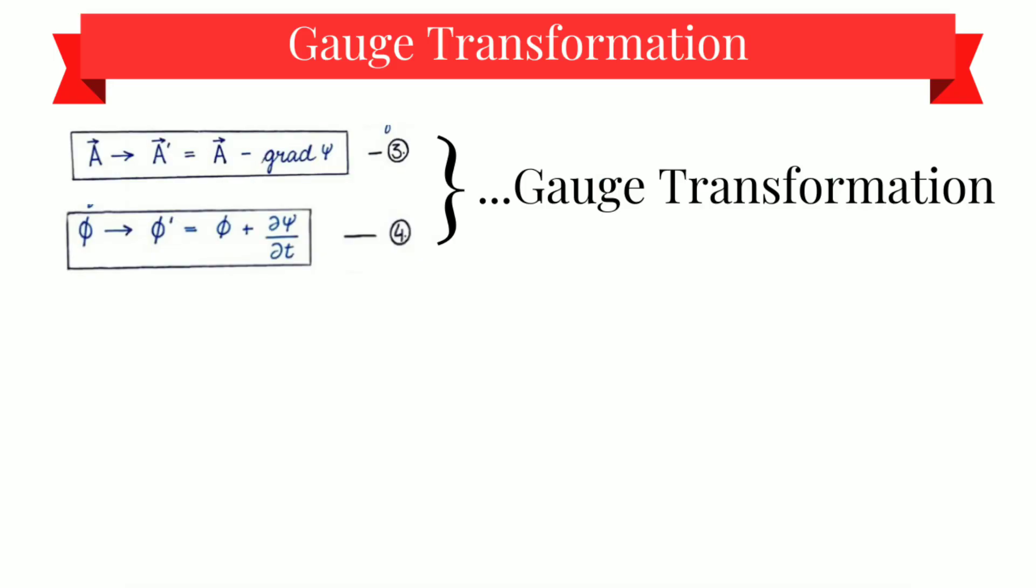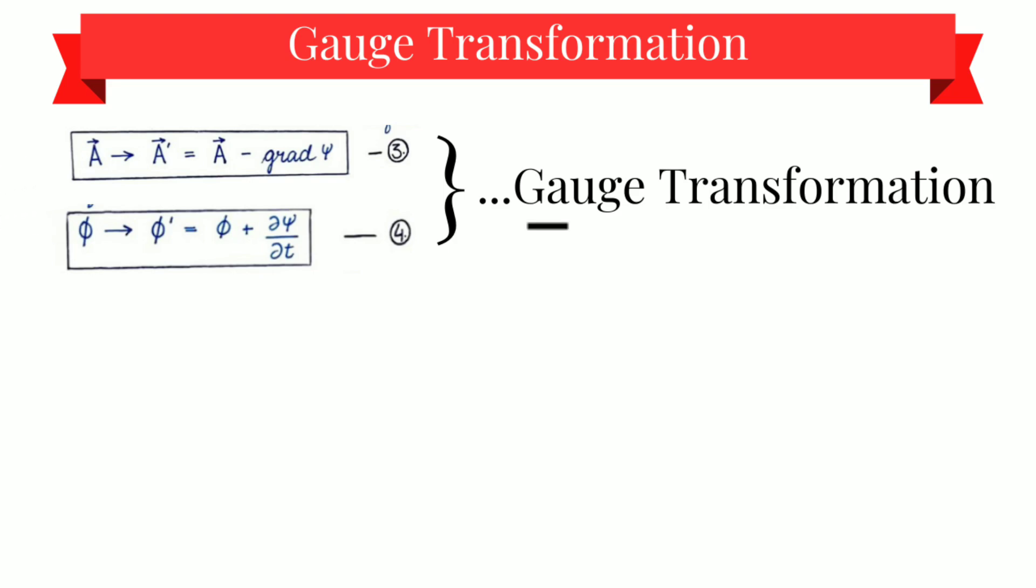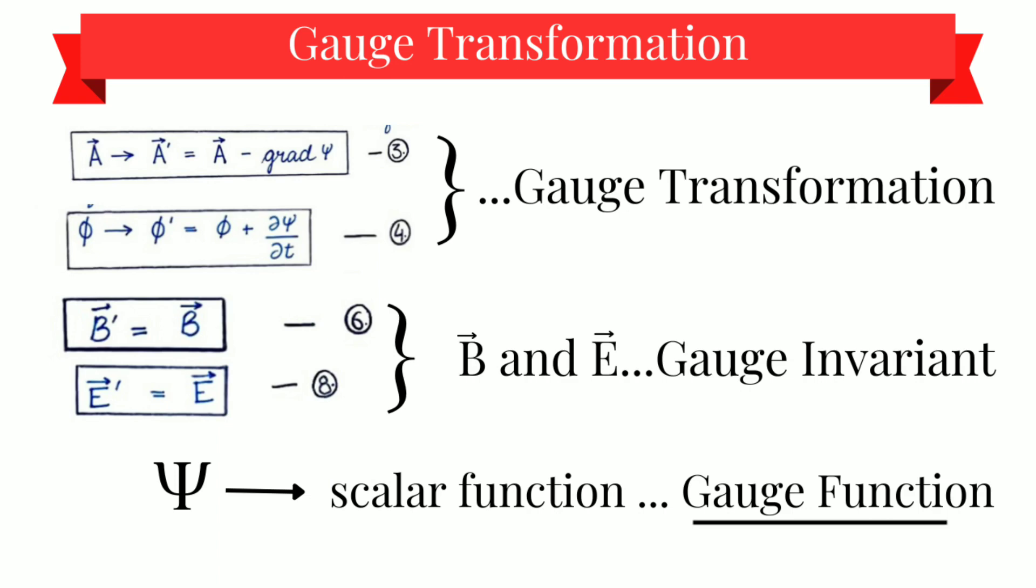Now, let's sum it up. Here, these two transformations, that is equation third and fourth, these are known as gauge transformation. Also, this B and E are known as gauge invariants because they are not changing under this transformation. And also, this psi which is a scalar function, this is called the gauge function.